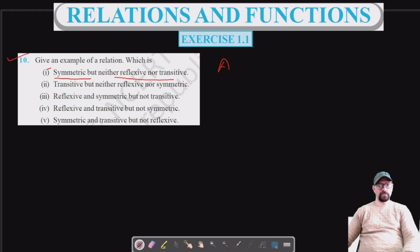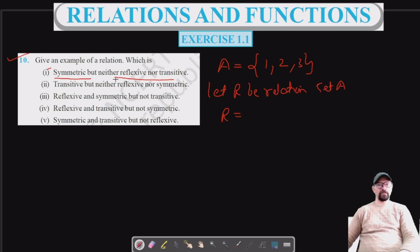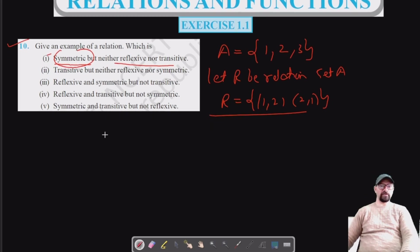Let's consider our set A which has elements 1, 2, and 3. Now let R be the relation defined on set A. It should only be symmetric, so I'm going to put only (1,2) and (2,1) in here. This relation is symmetric but neither reflexive nor transitive.